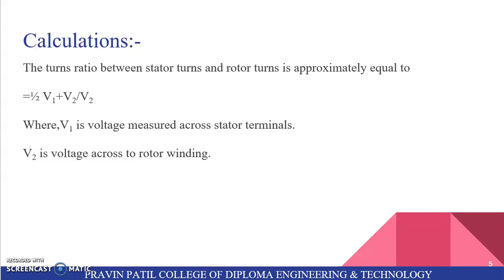Calculations: The turns ratio between stator turns and rotor turns is approximately equal to half of V1 plus V2 upon V2, where V1 is voltage measured across stator terminals and V2 is voltage across rotor winding.